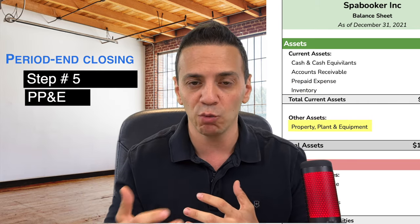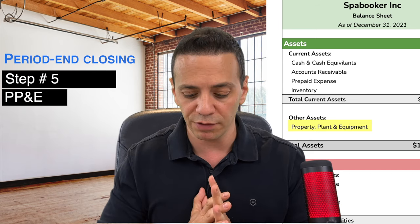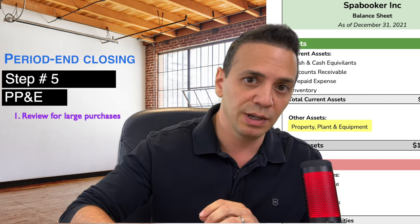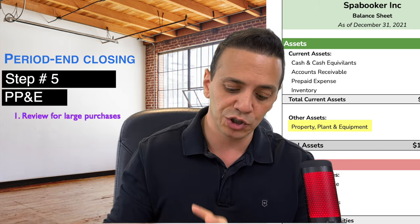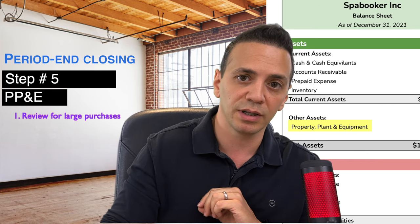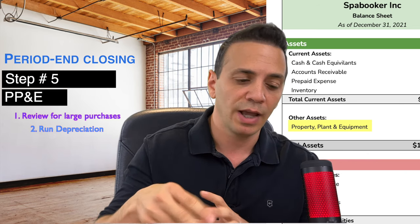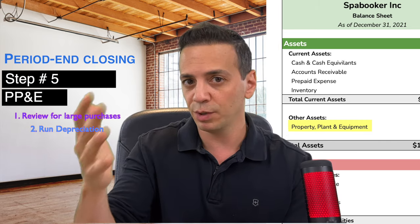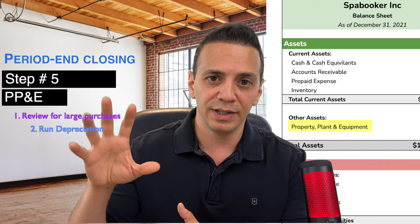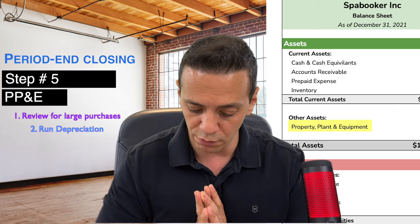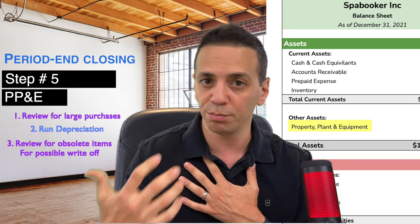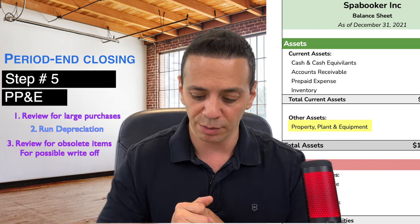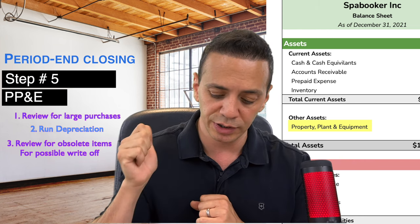Number five is PP&E — property, plant, and equipment, including factory buildings, machinery, and laptops. Do three things: first, review for large purchases that need to be capitalized under the company's fixed asset policy; second, run depreciation — on SAP or NetSuite this is a button push, on QuickBooks you may need to run it in Excel and book a journal entry; third, review for obsolete property or machinery and write off anything no longer utilized to the P&L.